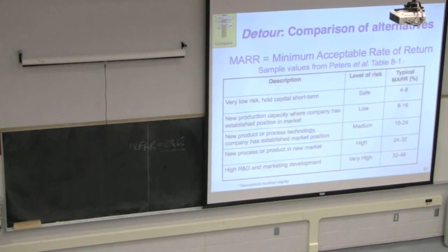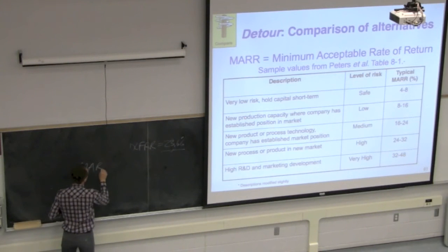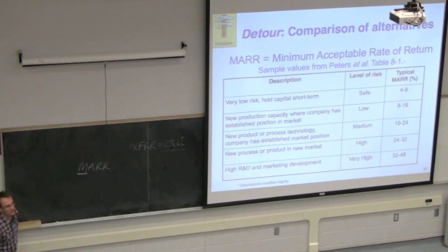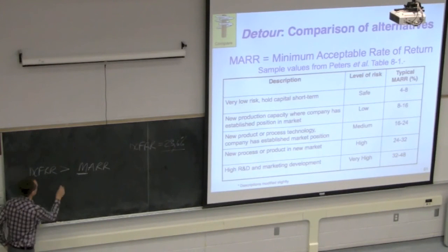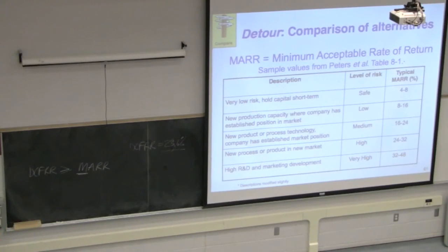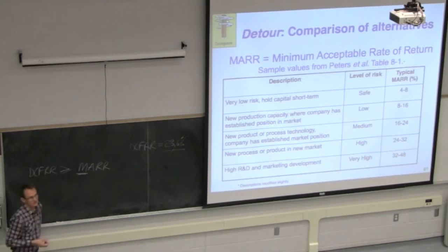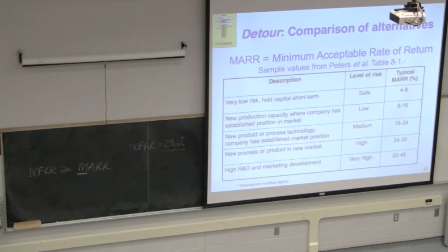Once you have your MARR — your minimum acceptable rate of return — you want rates of return that meet or exceed it. You need your DCFRR to be greater than or equal to the MARR for that project to be considered. If your DCFRR doesn't exceed that, the project is likely going to be excluded. The next thing to appreciate is that there's not one single criterion used to judge projects — we've seen payback time, return on investment, NPV, and DCFRR. There are several other factors companies can use.